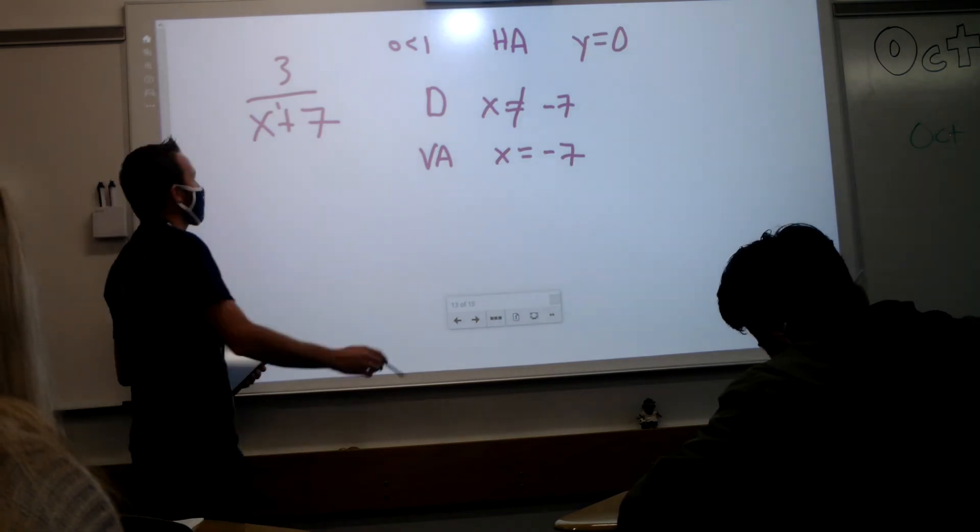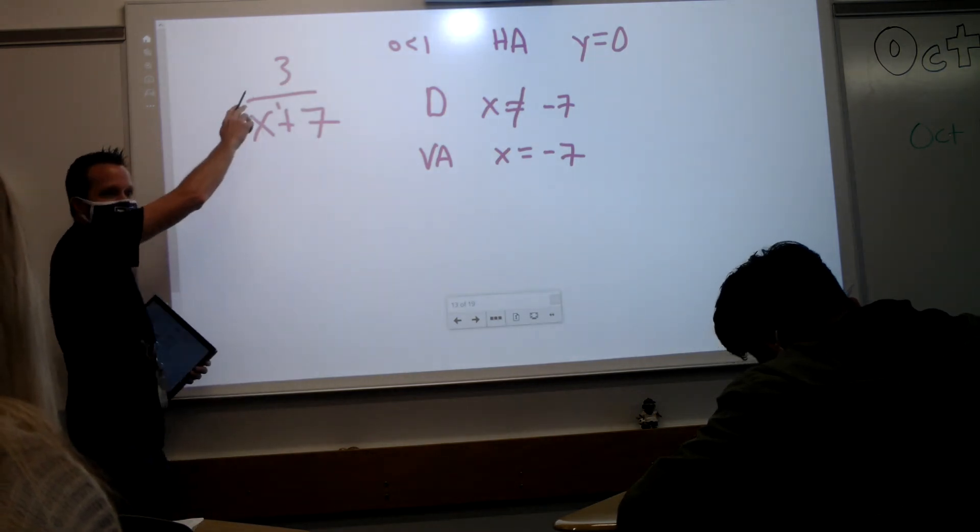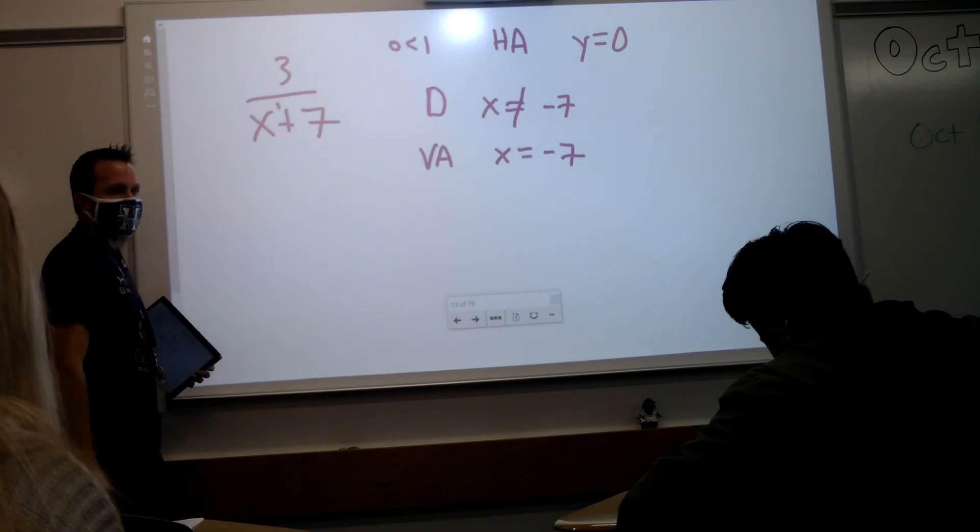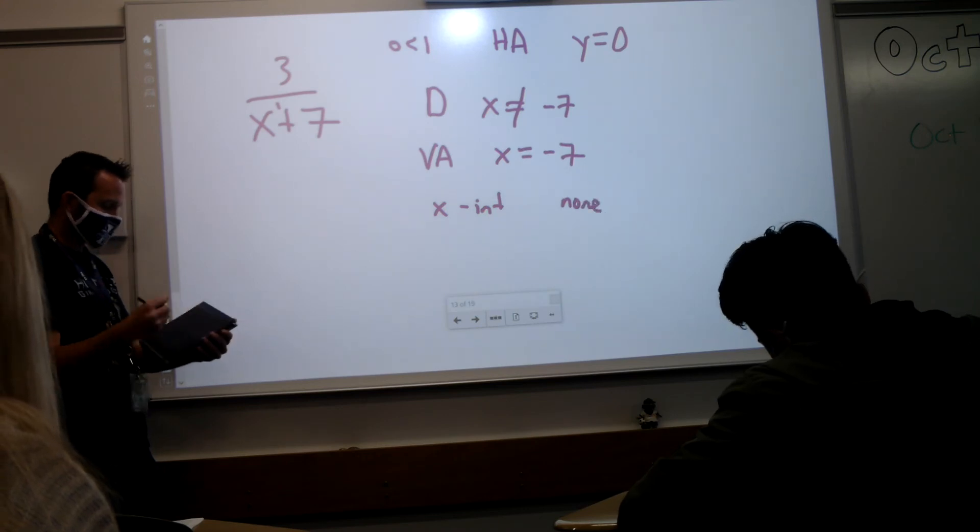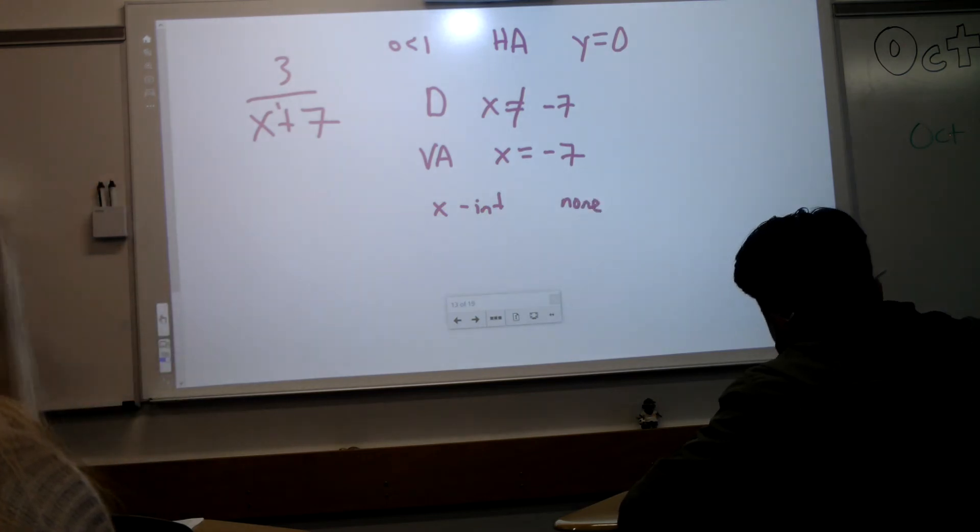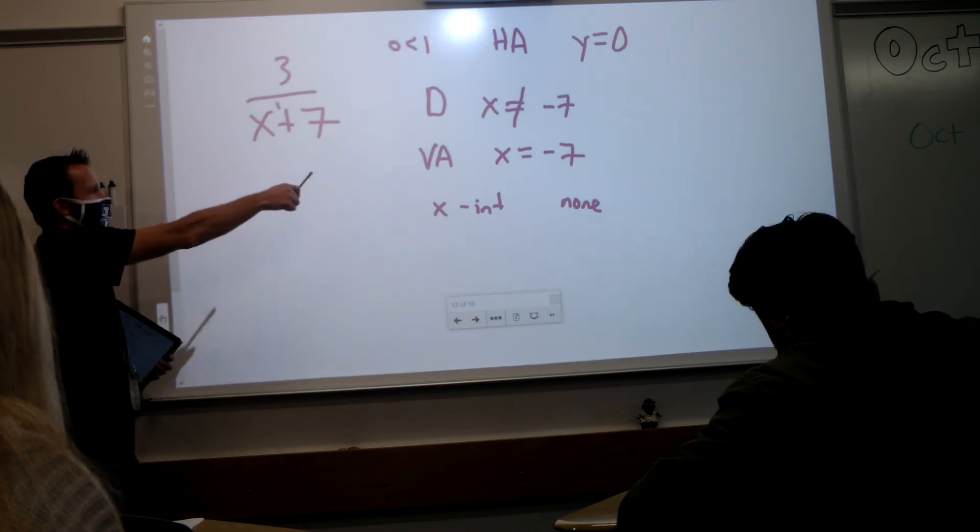The x-intercepts are whatever makes the numerator become zero. What if it's a constant? Will that ever be zero? Nope. So what does that tell you about the x-intercepts? There's no x-intercepts. Which, that makes a little bit of sense, but let's just keep going here. I'll talk about that y in a second.